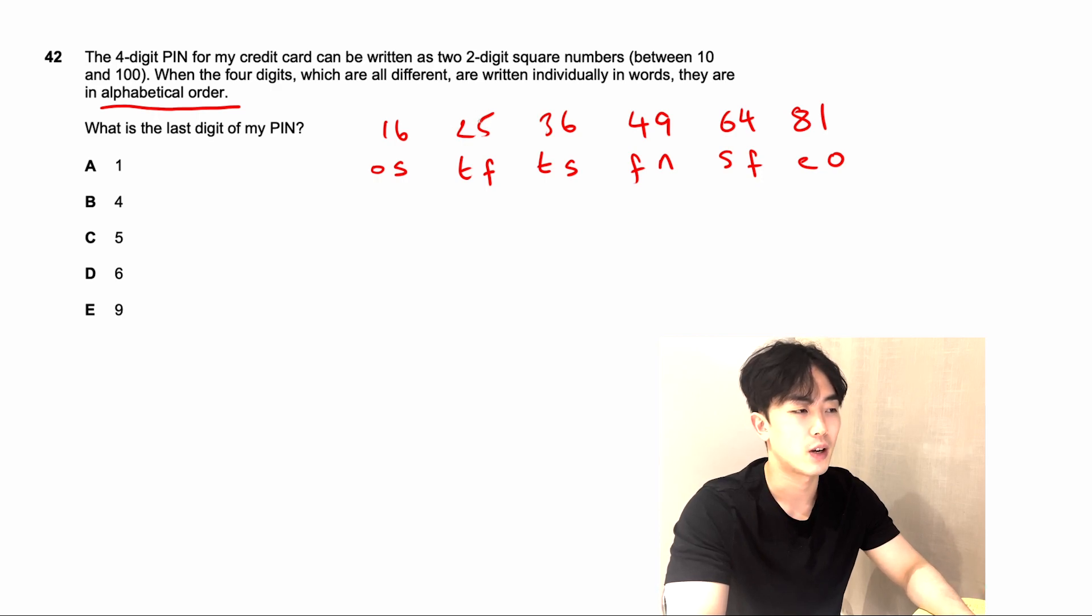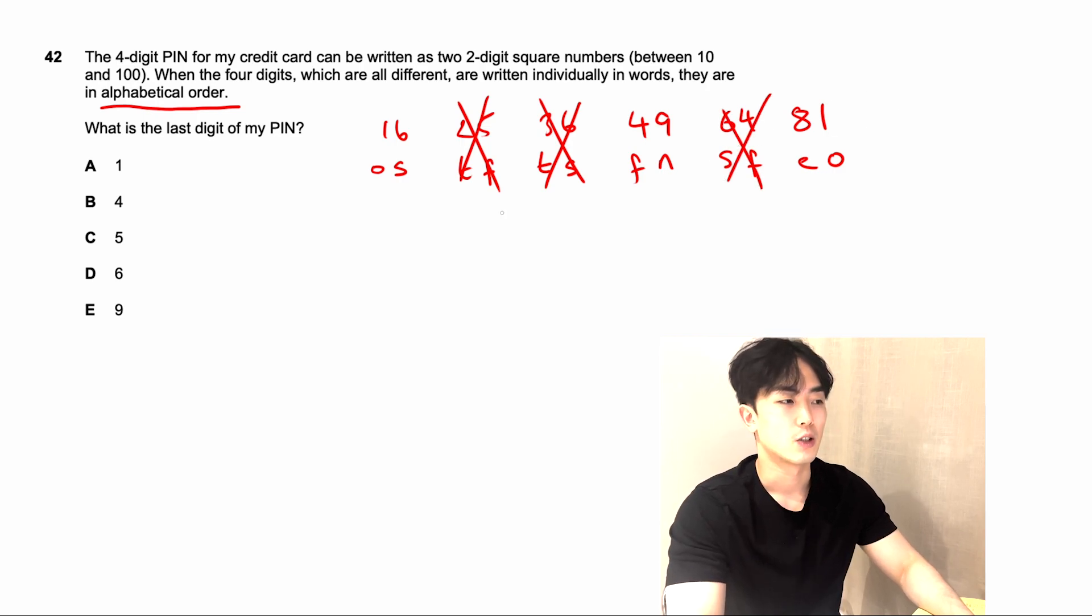However, if we look at 25, T and F, F comes before T in the alphabet, so this square number is impossible to be in our PIN number. Same thing with 36, S is before T, so we can't use this one. F is before N, so 49 is possible. 64 is not possible, and 81 is possible. So that means we can choose out of 16, 49, and 81.